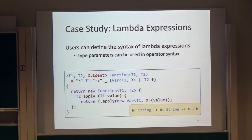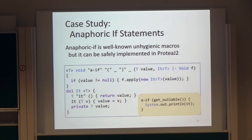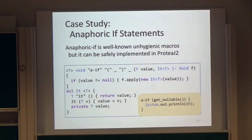We use anonymous classes for simplifying the program, but we have not implemented it yet. Anaphoric if is a well-known language construct that is often implemented by unhygienic macros. It can also be implemented in ProTJ2 in a type-safe fashion. It is almost the same as the definition of the let X expression — the difference is only that it does nothing if the given value is null.